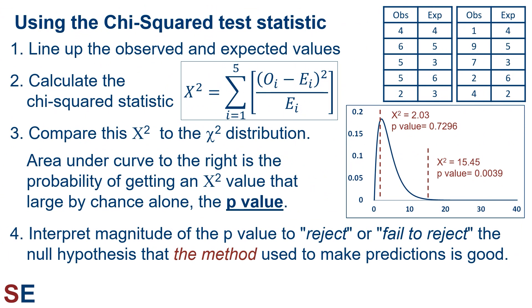Here's how we use the chi-squared statistic. First, we line up the observed and expected values. Second, we calculate the chi-squared statistic. Note that the calculated value is shown with an English letter capital X squared, to distinguish the sample chi-squared test statistic value from the chi-squared distribution. It's good practice to always make this distinction, but you'll see lots of people being imprecise about this. Third, we compare our calculated chi-squared value to the chi-squared distribution. We identify the point on the horizontal axis that matches our chi-squared value. The area under the curve to the right is the probability of getting a chi-squared value that large or larger by chance alone — the p-value. Finally, we interpret the magnitude of the p-value to reject or fail to reject the null hypothesis that the model used to make predictions is a good one.